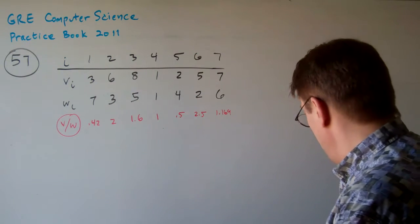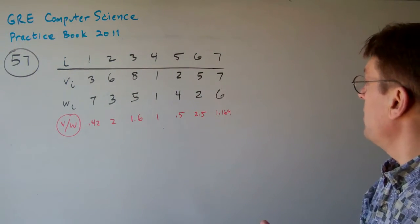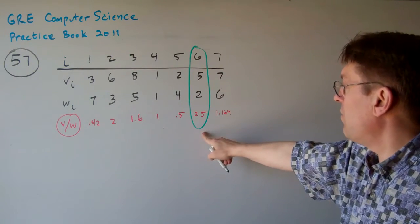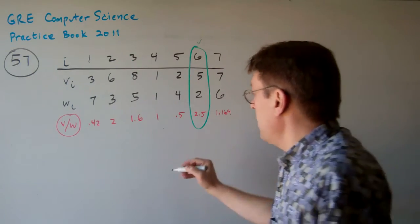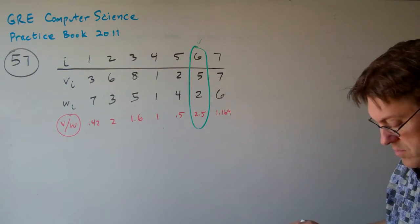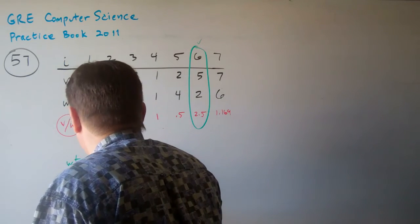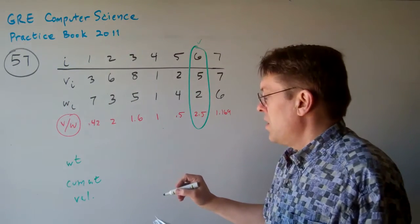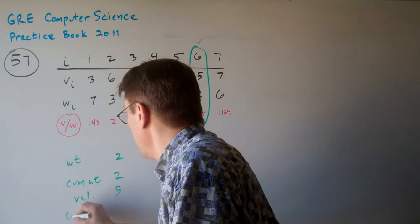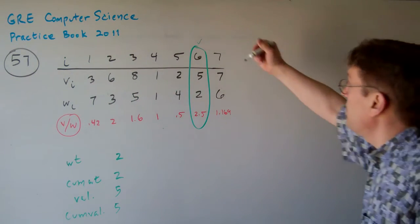It's going to pick the best value density, which that is going to be item 6. Item 6 has 2.5 value density. So we're going to pick that one first. And that's going to give us the value. The weight is 2. So let's just put the weight and the cumulative weight and the value. So we have a weight of 2, the cumulative weight is 2 and the value is 5. And let's put the cumulative value is 5. It means all the values added up so far. So what's going to happen? This is step 1.